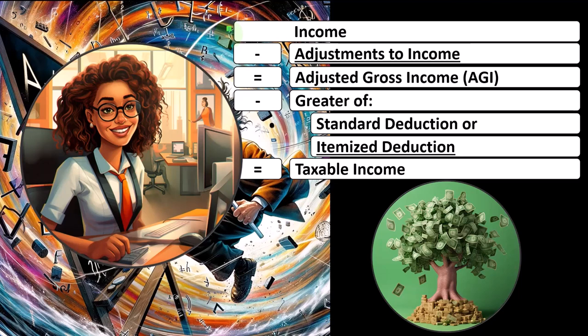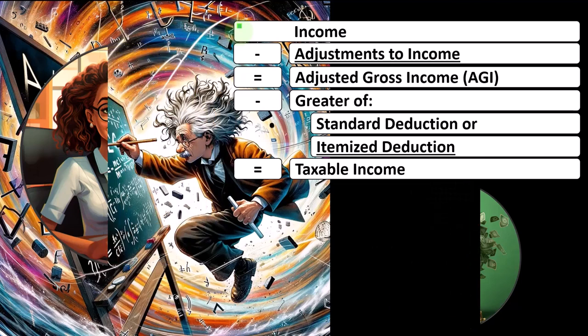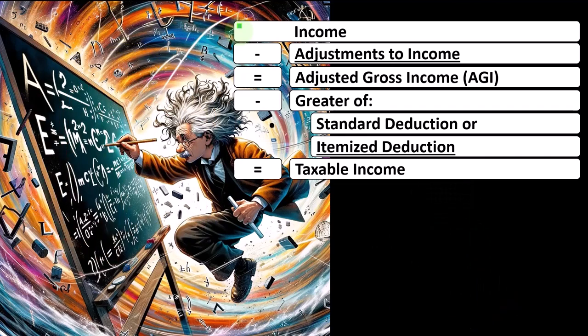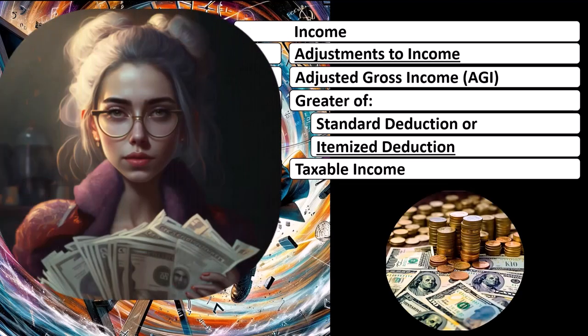If you compare that to somebody with a W-2 job who makes $100,000 but has no expenses — they didn't need to spend anything in order to generate the $100,000 — it wouldn't make sense to tax both of them on the top-line $100,000. It would make sense to tax people only on their net income, deducting the expenses that were needed in order to generate the income.